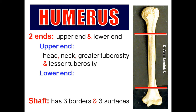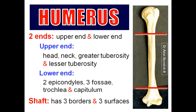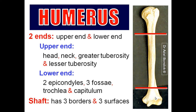The lower end of the humerus is formed of articular and non-articular parts. The articular part consists of the trochlea and the capitulum. The non-articular part consists of two epicondyles — medial and lateral — and three fossae: the coronoid fossa anteriorly, the radial fossa anteriorly, and the olecranon fossa posteriorly. The shaft has three borders: anterior, medial, and lateral; and three surfaces: anteromedial, anterolateral, and posterior.